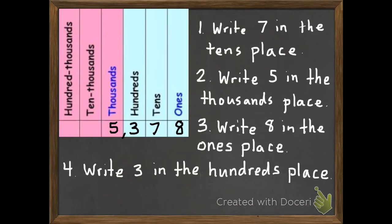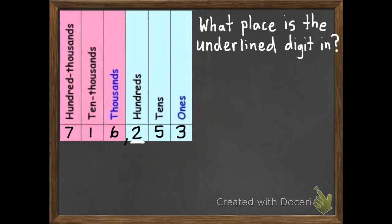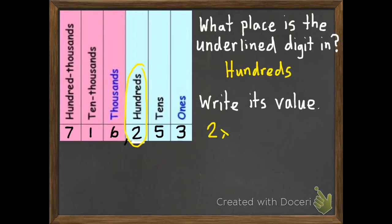Now we're going to have you try a couple. First of all, I want you to figure out what place is the underlined digit in. And then I want you to write its value. Go ahead and pause this and then unpause it to check your answer. Okay, here are the answers. The place of the underlined digit is the hundreds. And its value, since it's in the hundreds, would be two one hundreds, which is 200.